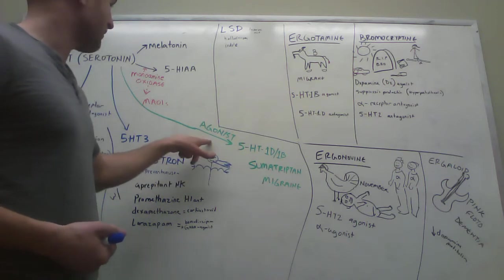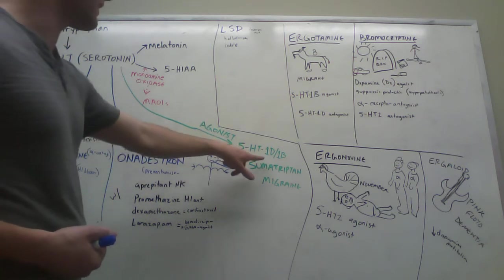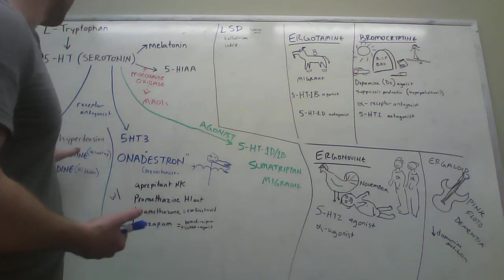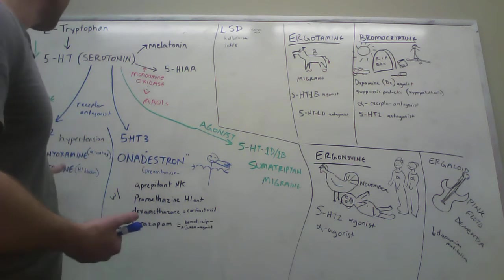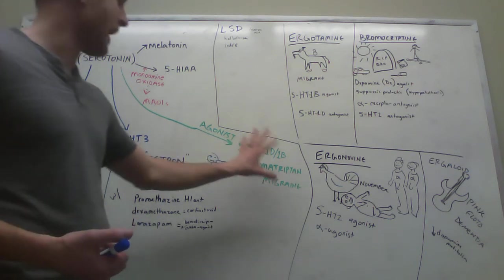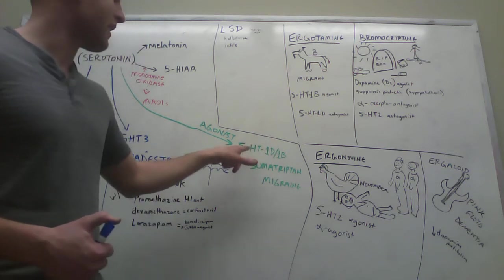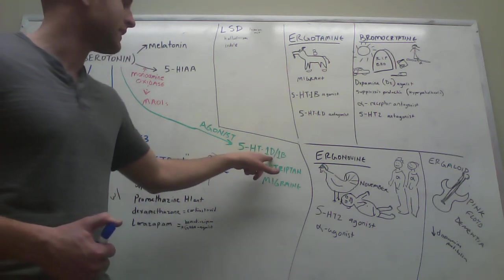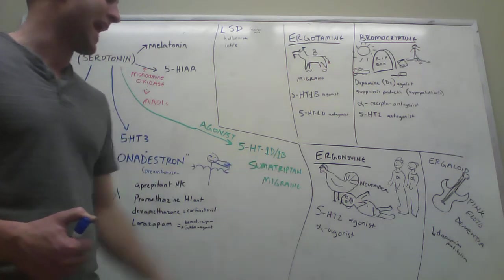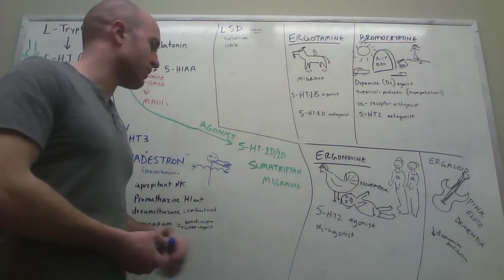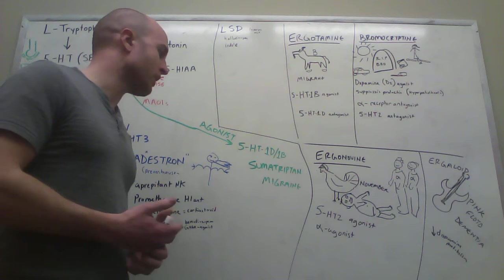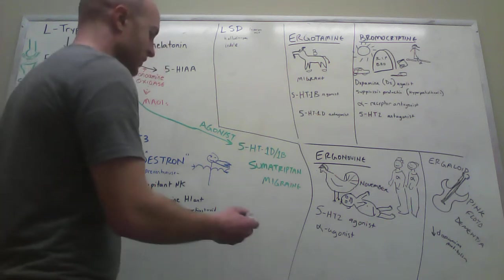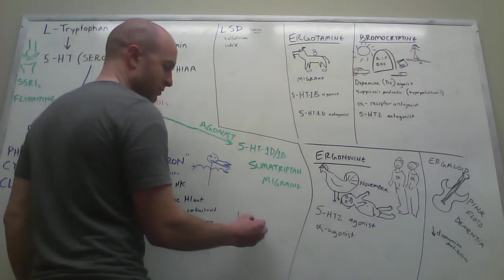The last one we have here is actually an agonist. These other 5-HT2 and 5-HT3, all this stuff was antagonist. This is an agonist, and it is 5-HT1D/1B agonist. This one is sumatriptan. What I'm going to have you imagine is this big fat sumo wrestler.